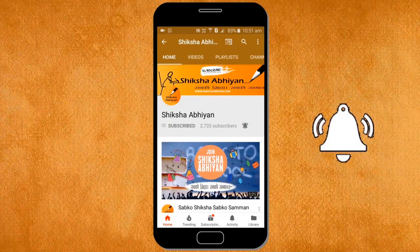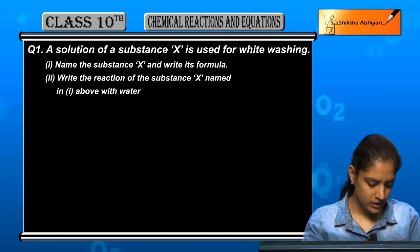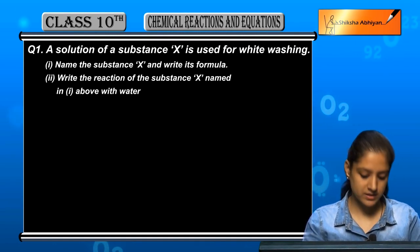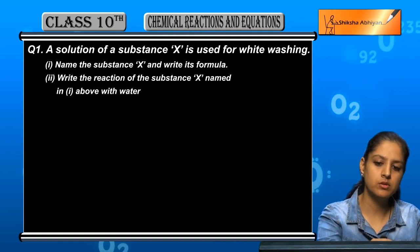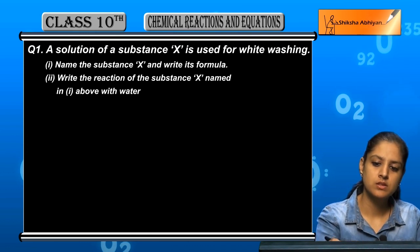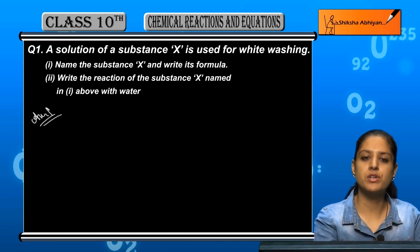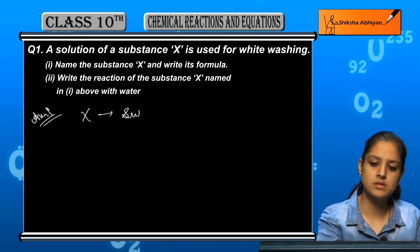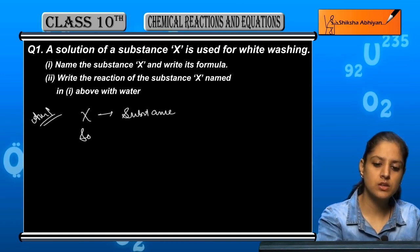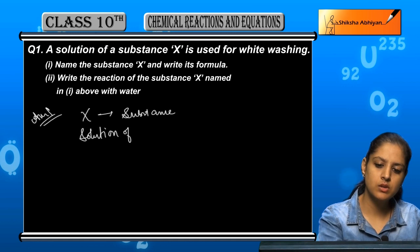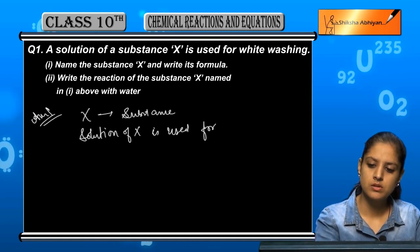Now let us see some questions. The first question is: a solution of substance X is used for white washing. So X is the substance whose solution is used for white washing.